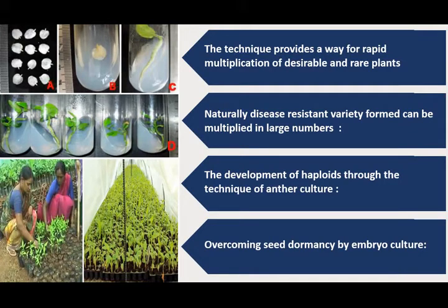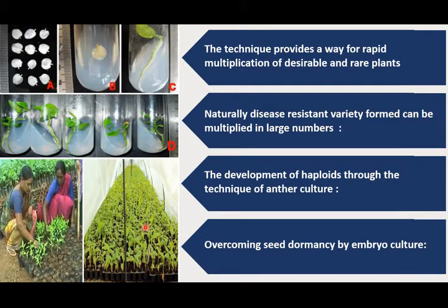Tissue culture also helps in producing plants through embryo culture, which helps us overcome seed dormancy. It is also utilized for producing viable plants from crosses which normally fail due to death of immature embryos. In embryo culture, we take the embryo of the plant, culture it in a nutritive medium, and produce a large number of plants. Embryos which under natural conditions may or may not produce a plant can successfully do so through tissue culture. These experiments were successful in the case of jute and rice.